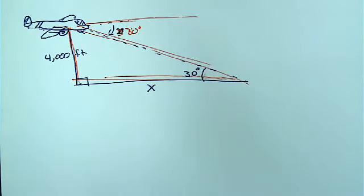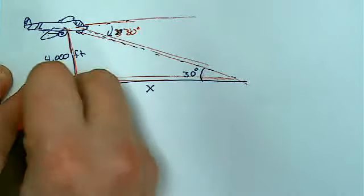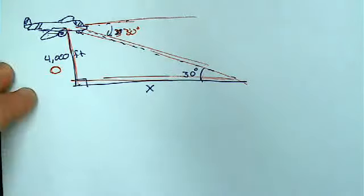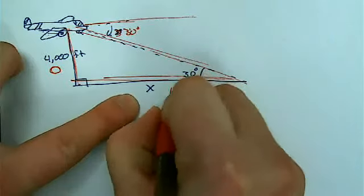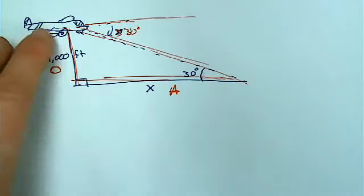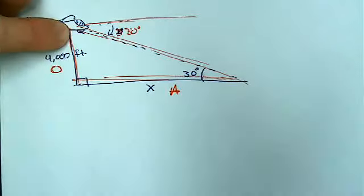Where am I going to put the opposite? That's the 4,000 feet. Adjacent? That's the X. And the hypotenuse then will be this side here, right? Okay.